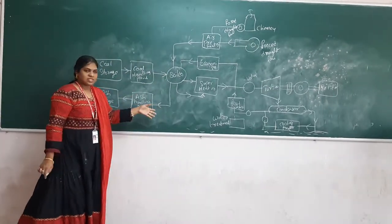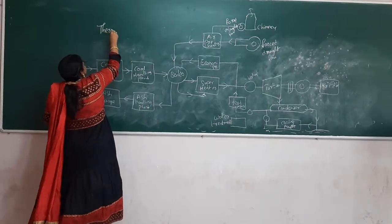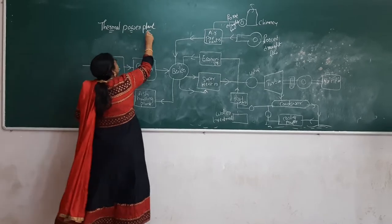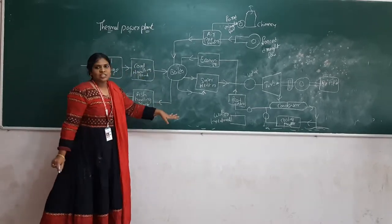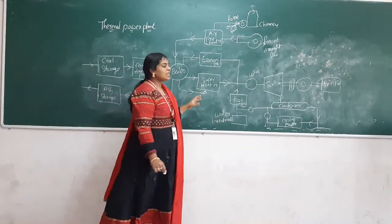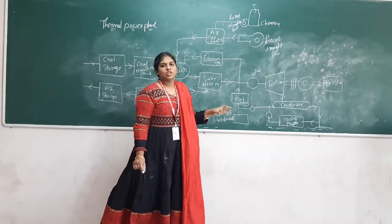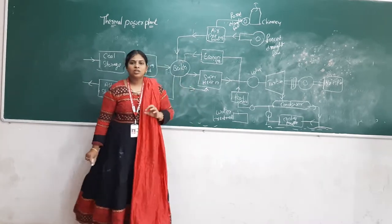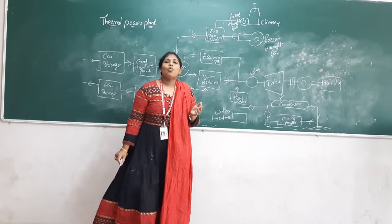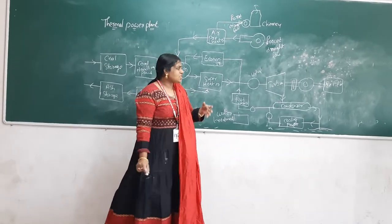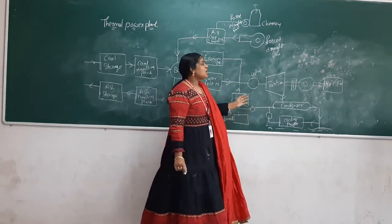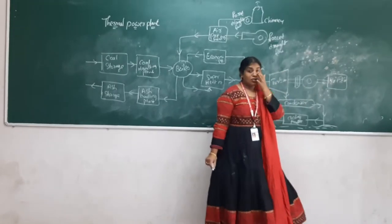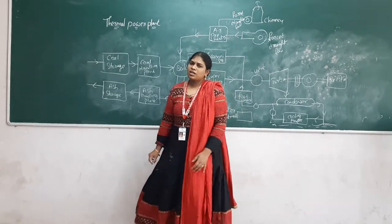This is the layout of the thermal power plant. By the combustion of coal, a high temperature of heat is produced. We are utilizing this heat to convert the water into steam. Once the water is boiled above the boiling point, it is converted to steam with high pressure. This steam is given across the turbine, where the turbine converts steam energy into mechanical energy. This mechanical energy is then connected across the alternator, where it is converted into electrical energy.